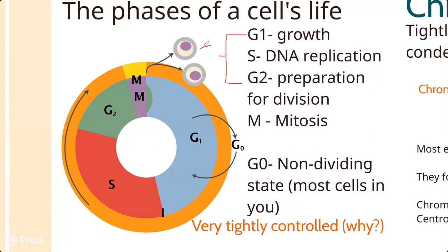G1 stands for first growth phase, G2 for second growth, and S stands for synthesis. In the G1 phase the entire cell is growing larger and doing all its normal functions - cellular respiration, photosynthesis if it's a plant cell, making proteins, making phospholipids, all the things the cell does. In the S phase (synthesis phase) the DNA in the nucleus replicates itself - it makes a copy.